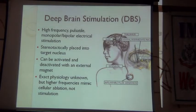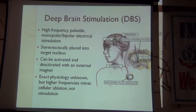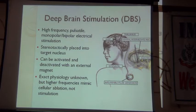What is deep brain stimulation? It basically involves making two burr holes, placing an electrode into deep areas of the brain, and connecting it to what can be described as a pacemaker — just like a cardiac pacemaker — on the side. It gives high-frequency stimulation, either monopolar or bipolar, into the target and can be activated or deactivated by an external magnet. How it exactly works nobody knows, though many people think it actually inhibits the area of the brain where the electrode is placed.